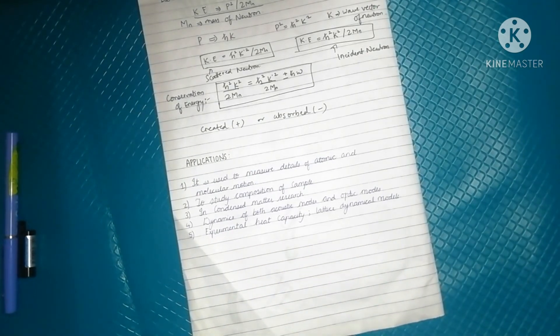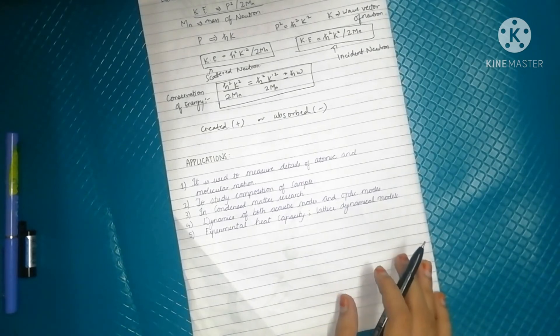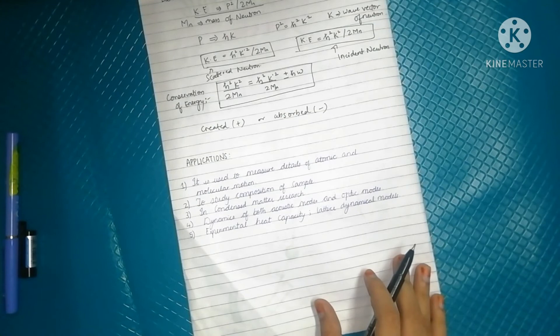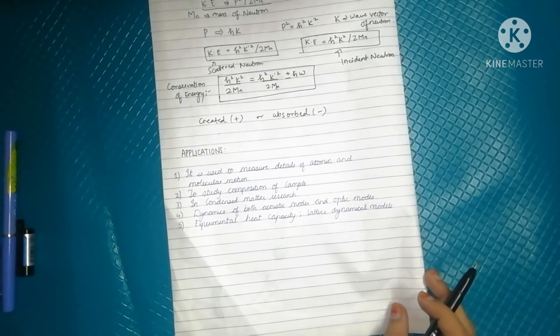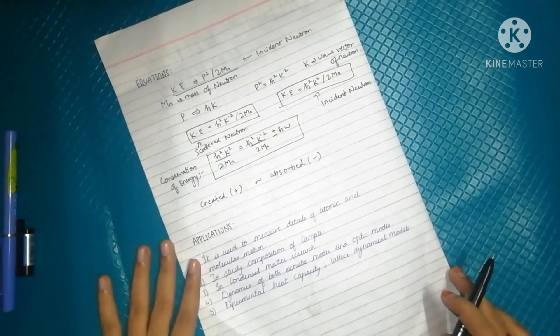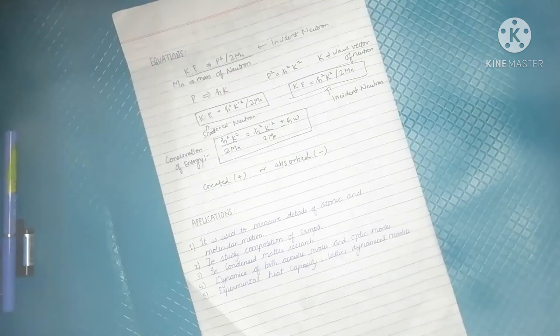Thirdly, it is used in condensed matter research to study atomic and molecular properties. INS, or inelastic neutron scattering, provides information concerning the dynamics of both acoustic modes and optic modes in a crystalline structure. Also, it can be used to calculate the experimental heat capacity and to test lattice dynamical models. These are a few of the applications of the technique, inelastic neutron scattering.